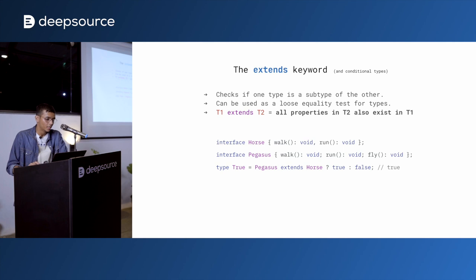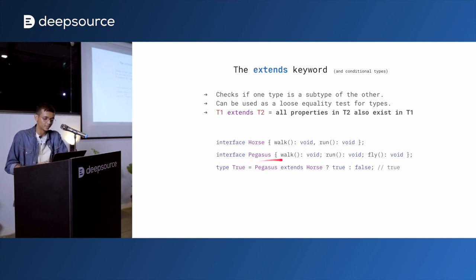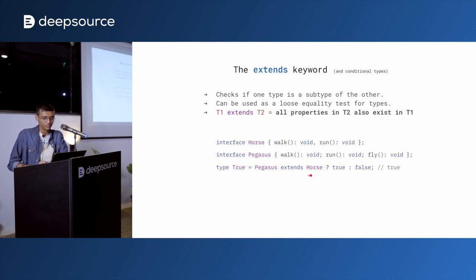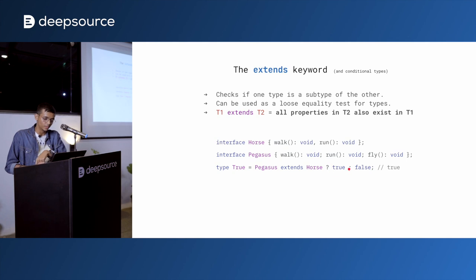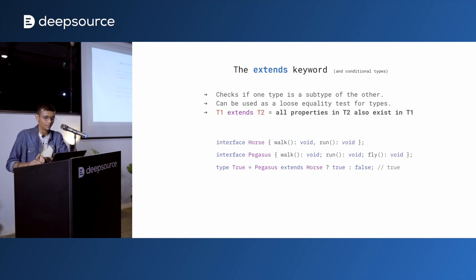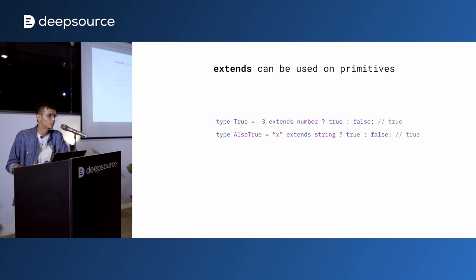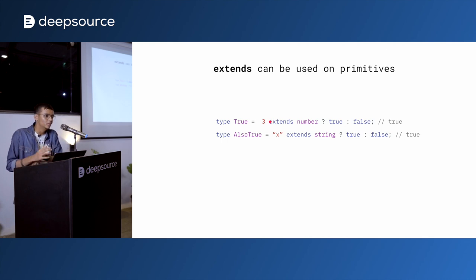For example, a Horse type has two properties — walk and run, both functions returning void. Pegasus can walk, run, and fly. So a pegasus can do everything a horse can and more. When you say Pegasus extends Horse, the type system resolves this to true. This works on primitives too: 3 extends number resolves to true because all threes are numbers, and 'x' extends string because all 'x' in double quotes are strings.